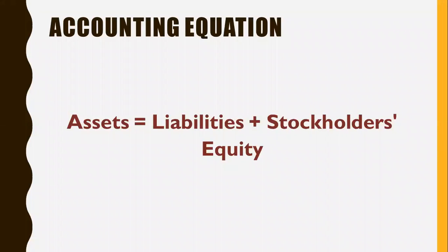Put all that together and we have the accounting equation. The accounting equation is: assets equals liabilities plus stockholders' equity. Remember we said stockholders' equity was the leftovers — this just rearranges that equation a little bit. Assets should be the biggest number because hopefully we have more things of value than we owe other people. At this point you don't need to think about it very much, but we'll come back to that later in our exercises.